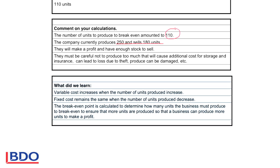So what did we learn today? The variable cost increases when the number of units produced increases. So if we make more units, we will use more material and we will use more laborers, so the cost will increase.